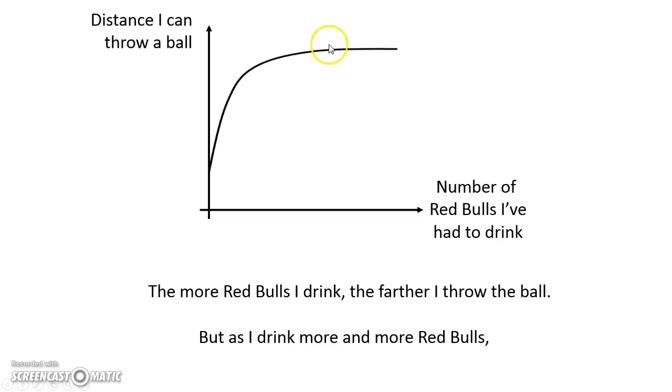But as the number of Red Bulls gets bigger and bigger and bigger, as you go to the very far right of the graph, my throw distance reaches a constant and it ceases to change. It ceases to increase any further. There is a limit on how far I can throw the ball.